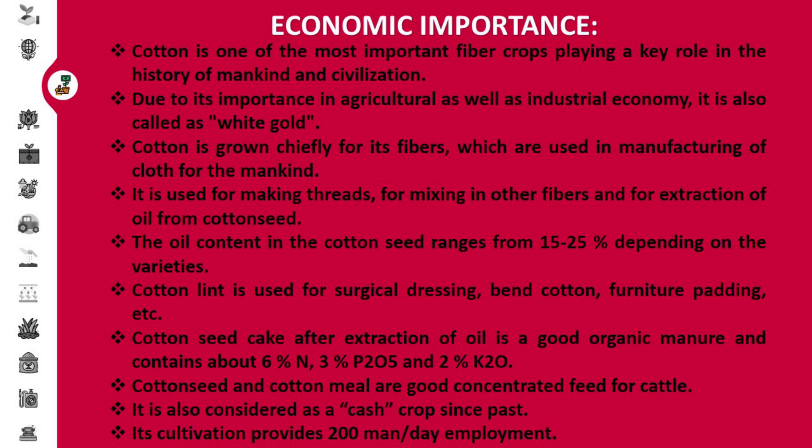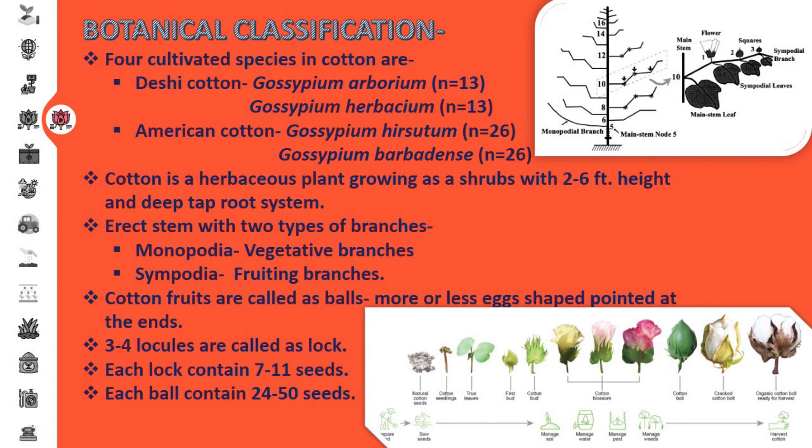Cotton is also used for making other fibers and extraction of oil from cottonseed. The oil contained in the cotton seed ranges from 15 to 25 percent depending on the varieties. Cotton lint is used for surgical dressing, cotton furniture padding, etc. Cotton seed cake after extraction of oil is a good organic manure and contains about 6 percent nitrogen, 3 percent phosphorus, and 2 percent potassium. Cotton seed and cotton meal are good concentrated food for cattle. It is also considered a cash crop, and its cultivation provides 200 man-days per day employment.